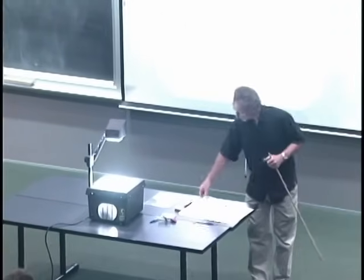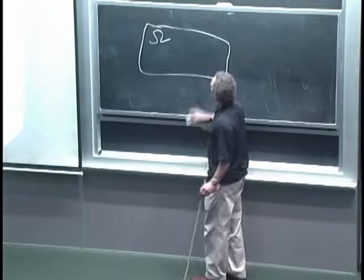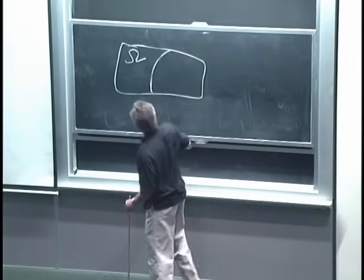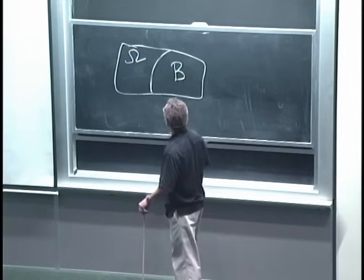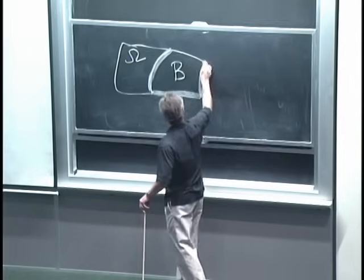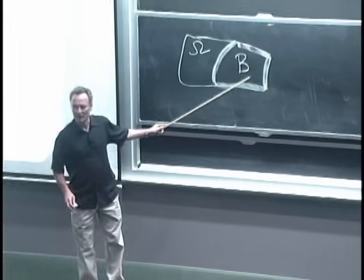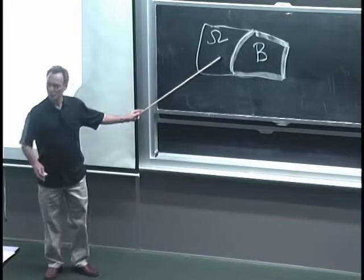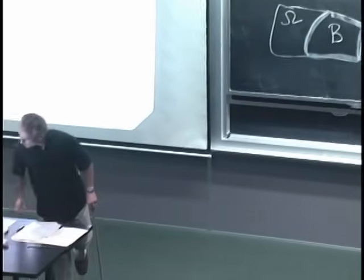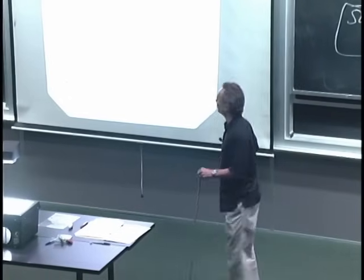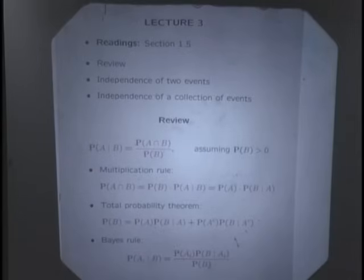So what did we talk about last time? The idea is that we have an experiment with a sample space omega. Then somebody tells us that the outcome of the experiment happens to lie inside a particular event B. Given this information, it changes what we know about the situation — the outcome is going to be somewhere inside B, which becomes our new sample space.